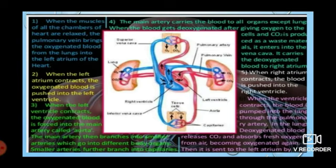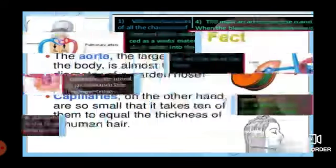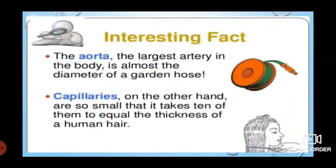In the lungs, deoxygenated blood releases CO2 and absorbs fresh O2 from the air, becoming oxygenated again. Then it is sent to the left atrium by the capillaries. Like that, blood enters the heart two times — that is why it is called double circulation.